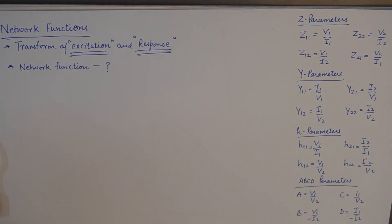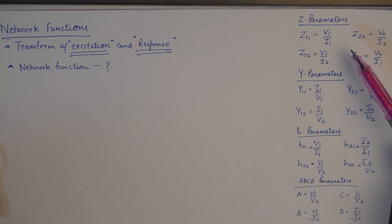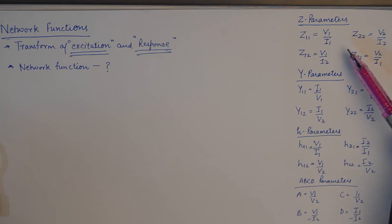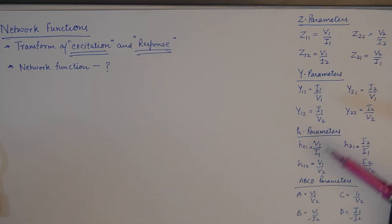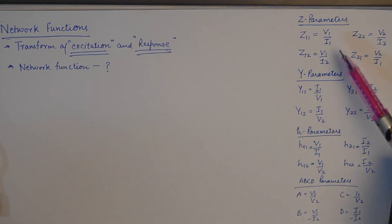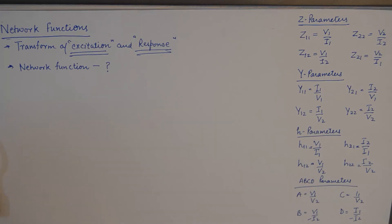This series has prerequisites from two-port networks basics. In the first tutorial, I've written down the key points from two-port networks. On the right hand side I've mentioned all the two-port network parameters: Z parameters, Y parameters, hybrid parameters, and ABCD parameters, with their values.